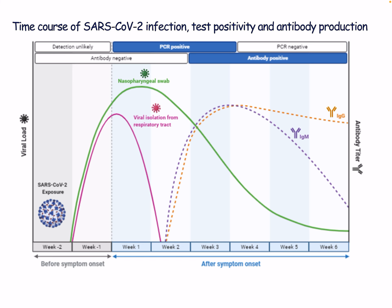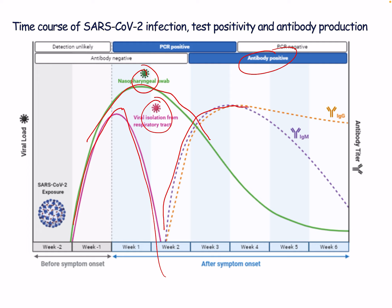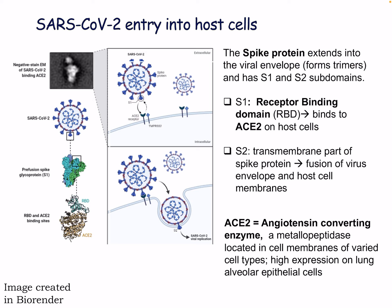Here's a more relevant example: the time course of SARS-CoV-2 infection, test positivity, and antibody production. The nasopharyngeal swab reflects viral load, and we can see that isolation from the respiratory tract is high initially, then slowly decreases — the tipping point occurs when we fully develop our antibody responses. In all antibody responses, IgM is activated first, then class switching occurs. IgM slowly decreases while IgG responses are increased or maintained long-term. IgM is usually not involved in long-term memory, but it can be.